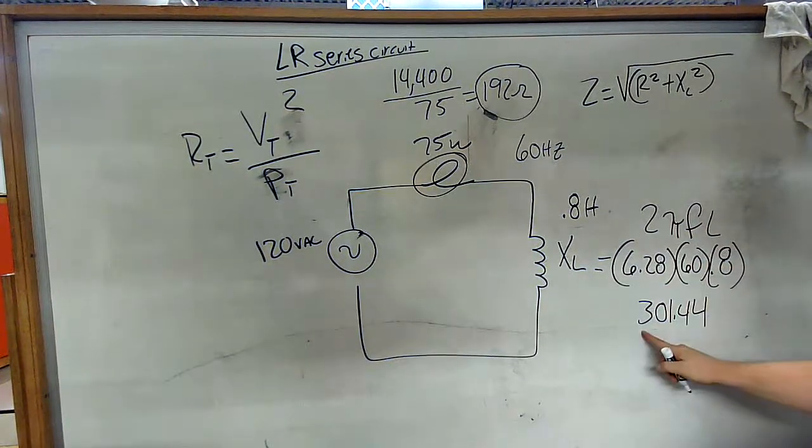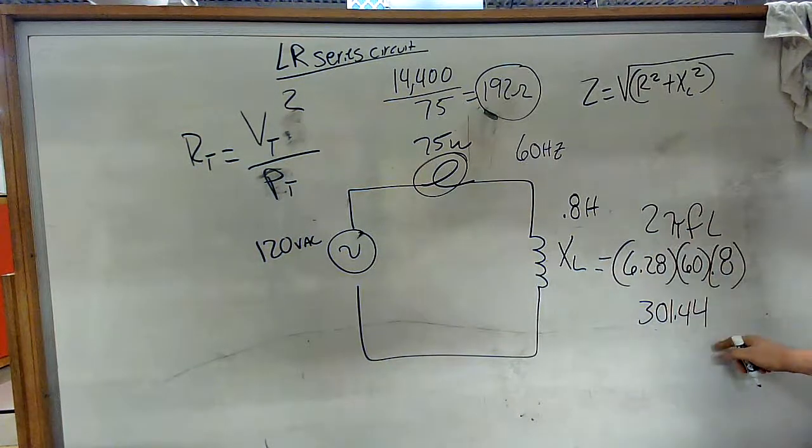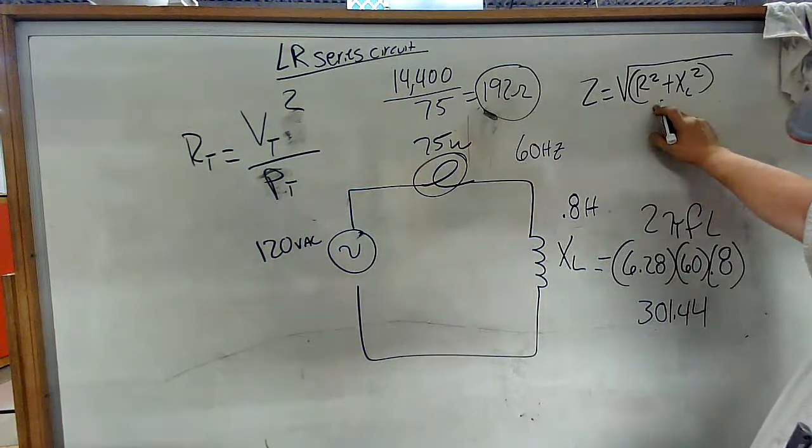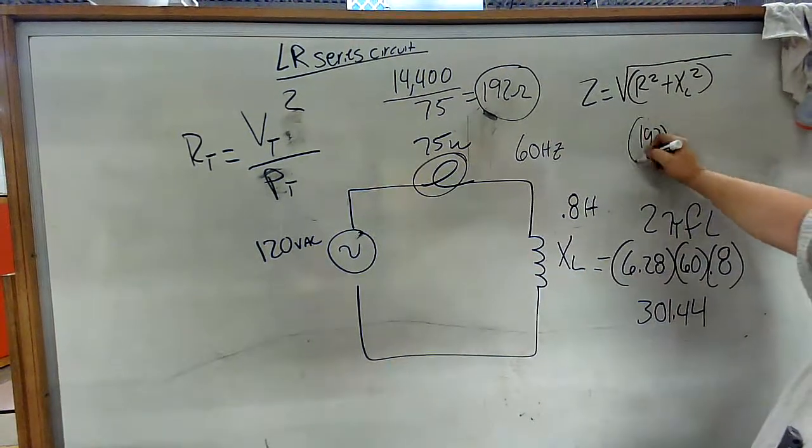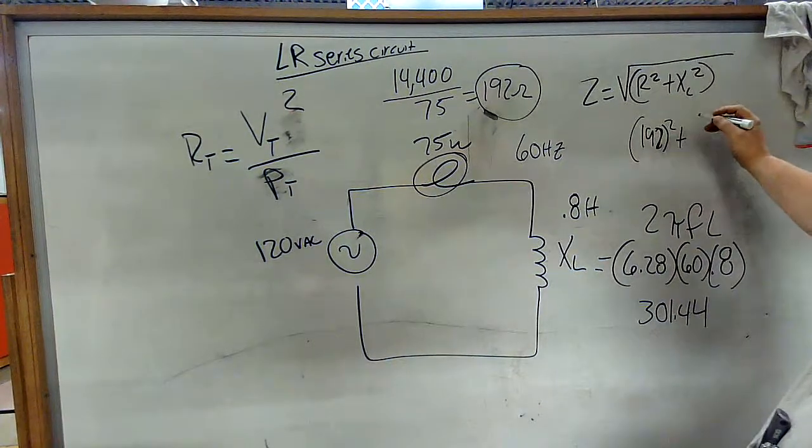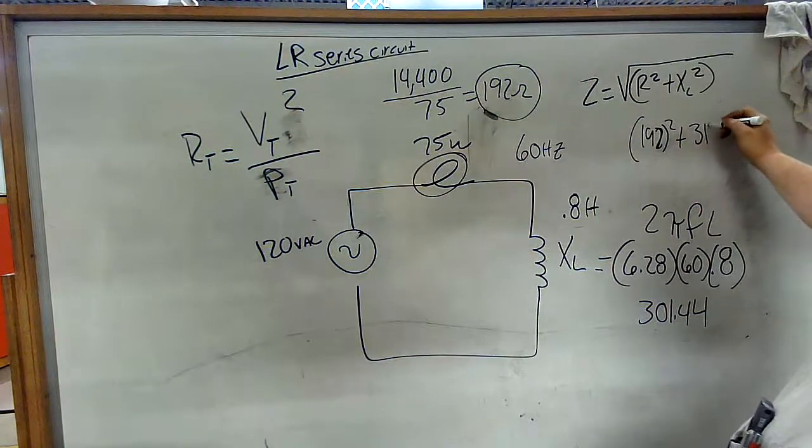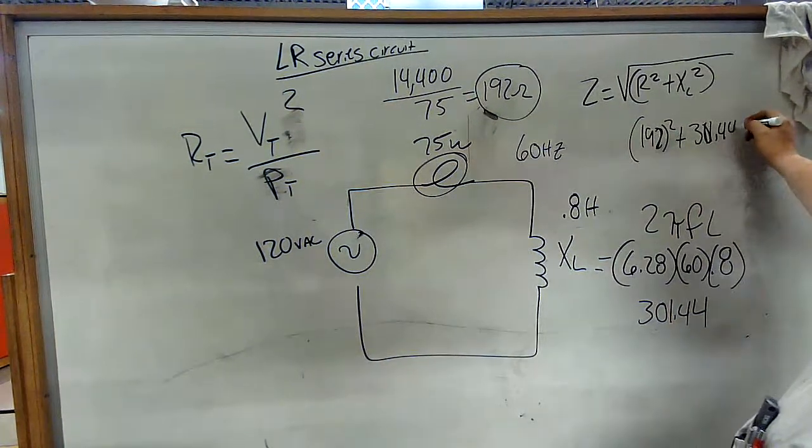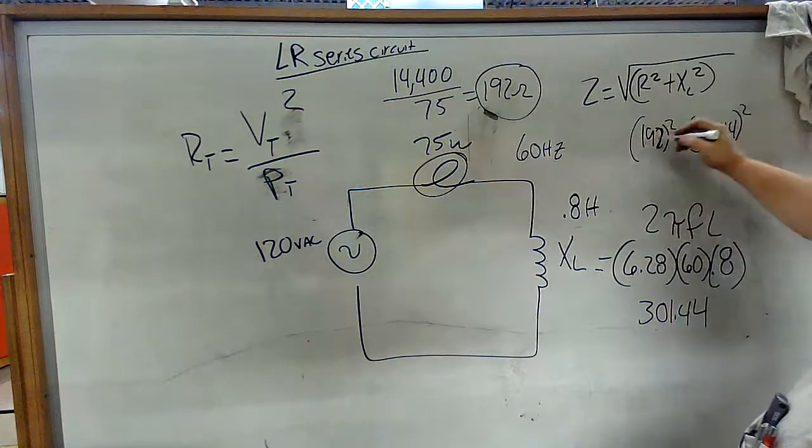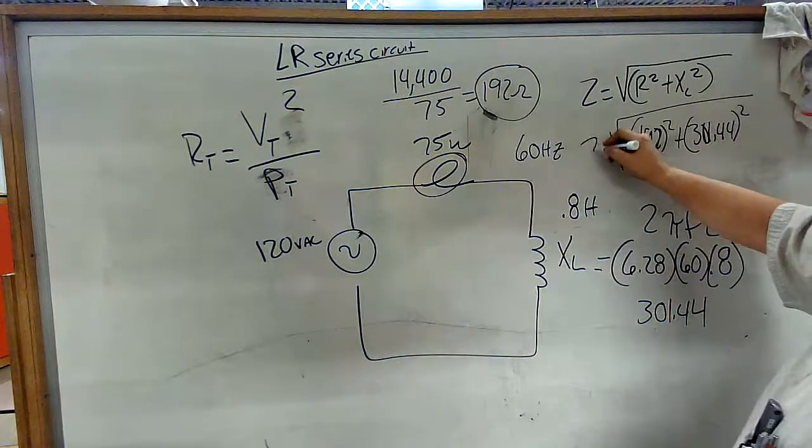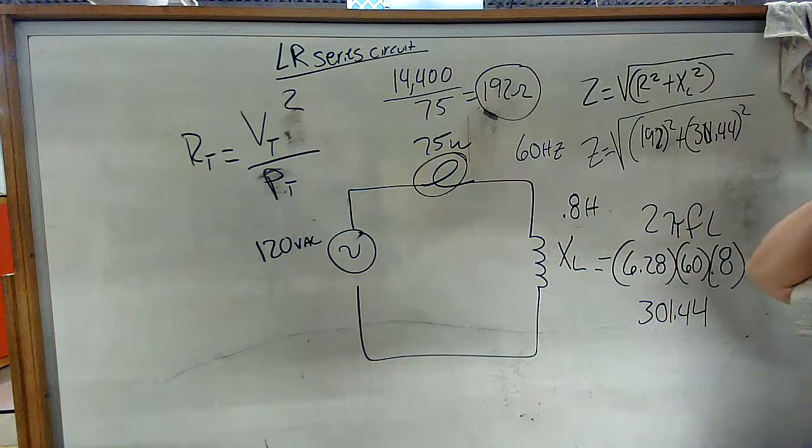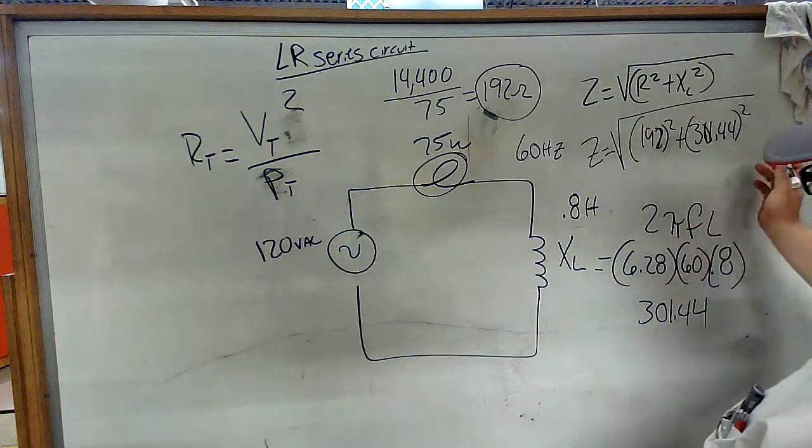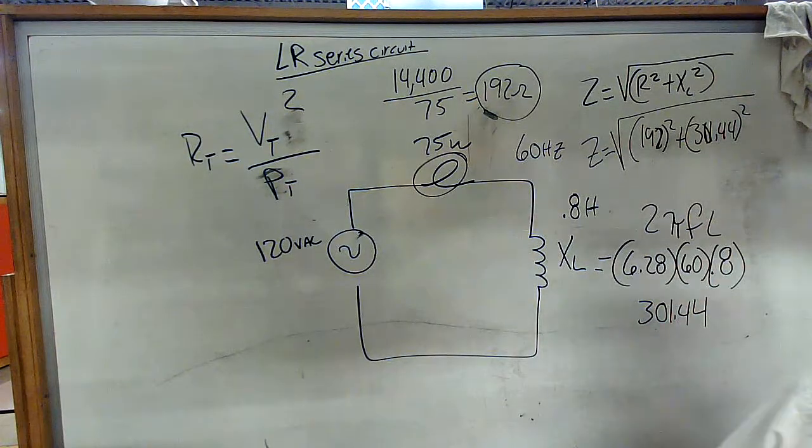Gives me 301.44. So my Z is 192 squared plus 301.44 squared. Add those together, square root them, and your answer will kick out.